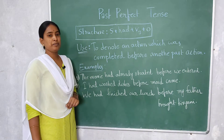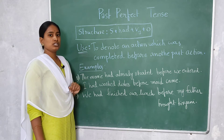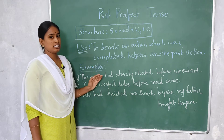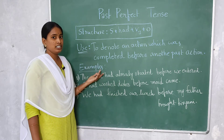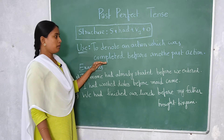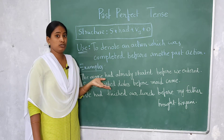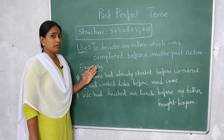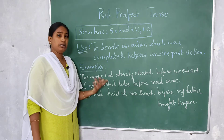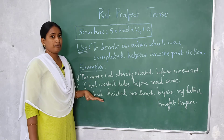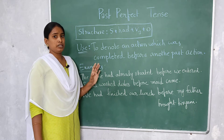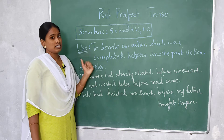Let us see past perfect tense. What is the usage of past perfect tense? When there are two actions completed in the past, for the earliest action we use past perfect tense. That is the definition — to denote an action which was completed before another past action. There can be two, three, or four actions in the past, happening at a time or one before the other.